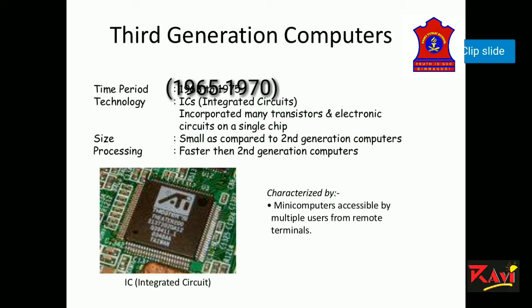The features of third generation computers are: the size became smaller than the first and second generation. They were more reliable. Users interacted with keyboards and monitors which interfaced with an operating system. They generated less heat. They used high level languages like COBOL and Fortran.